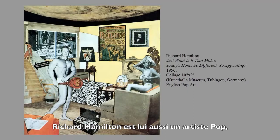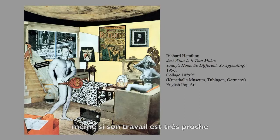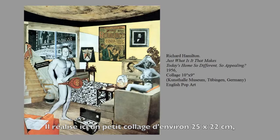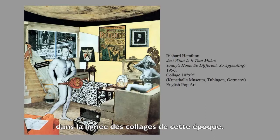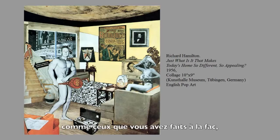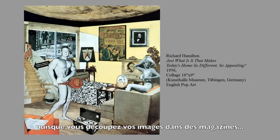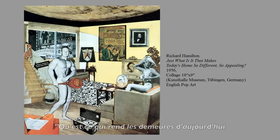Richard Hamilton is another pop artist — he happens to be from England, so we call it English pop art, though he is closely aligned to the New York School of Pop Artists. He does a small collage, just 10 inches by 9 inches. When you're making collages like this, it has to be fairly small scale because you're cutting things out of magazines and popular culture.